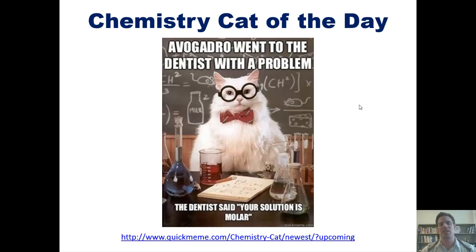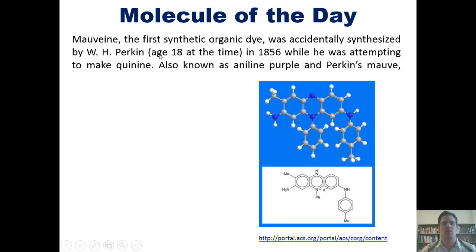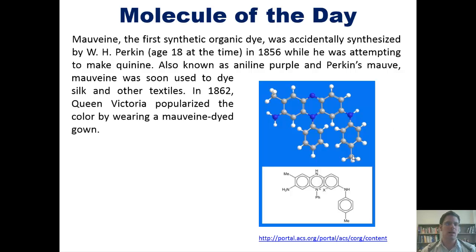I also want to share with you a cool molecule of the day from the American Chemical Society's molecular portal. Mauveine, the first synthetic organic dye, whose structure is shown here, was accidentally synthesized by W.H. Perkin, who was 18 years old at the time, in 1856, while he was attempting to make quinine. Also known as aniline purple and Perkin's mauve, Mauveine was soon used to dye silk and other textiles.